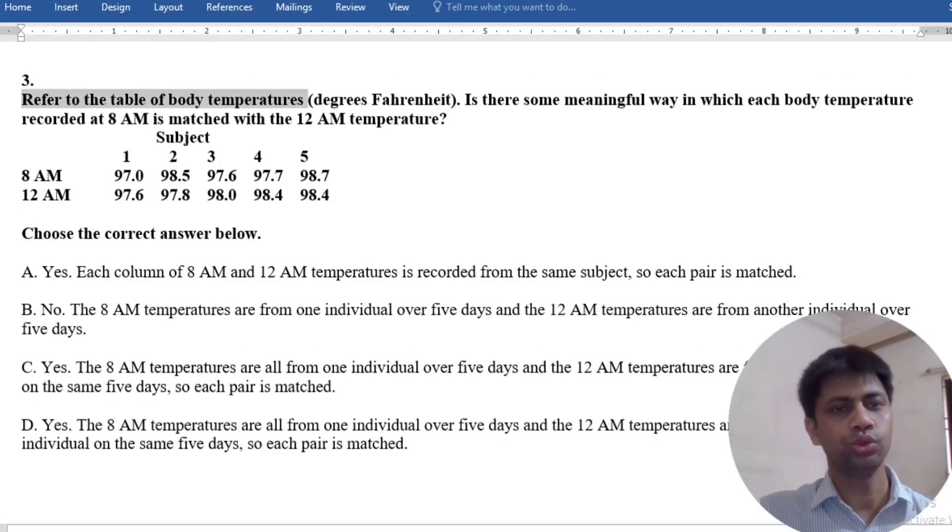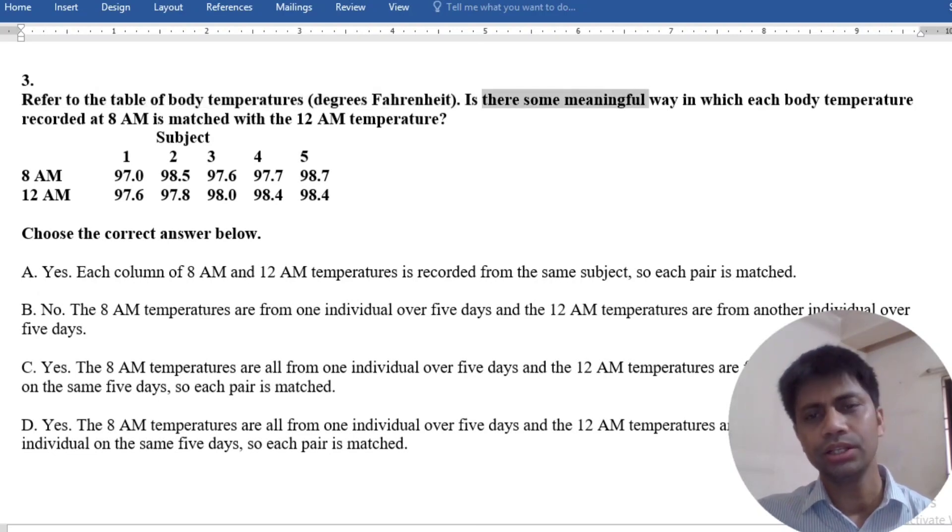Refer to the table of body temperatures in degrees Fahrenheit. Here the body temperatures are measured in degrees Fahrenheit. Is there some meaningful way in which each body temperature recorded at 8 AM is matched with the 12 AM temperature?